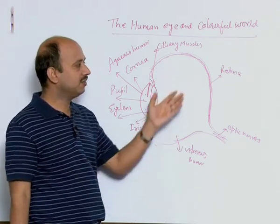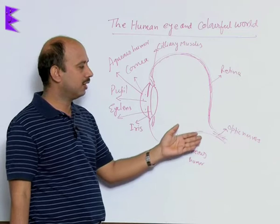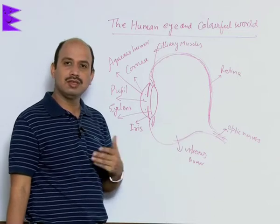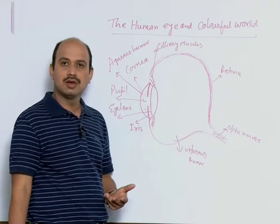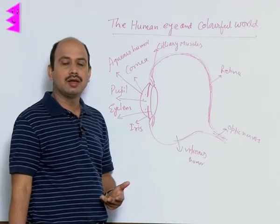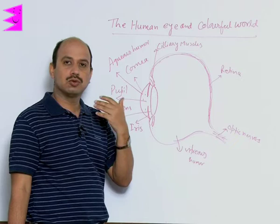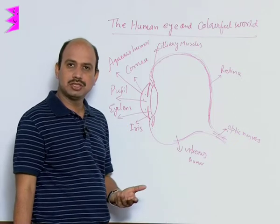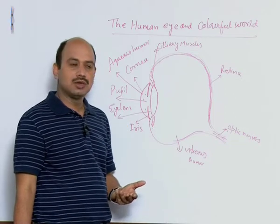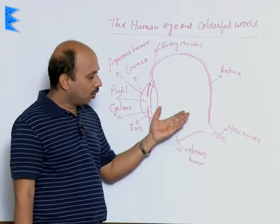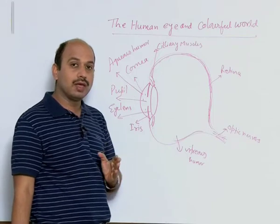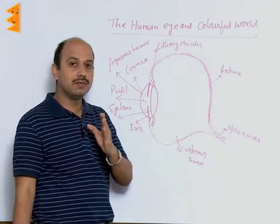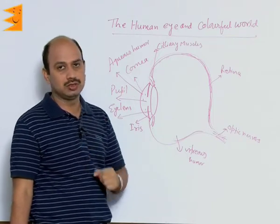With the help of the light-sensitive cells on the retina, we can see all colourful objects, and we can also see brighter images. All these parts play an important role in the formation of images.